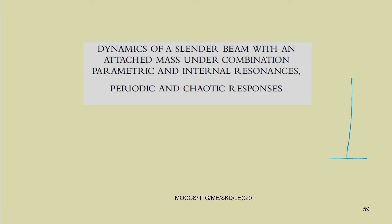We have taken the same base-excited cantilever beam with an arbitrary mass position. By placing the mass at an arbitrary position or adjusting it, we can set the frequencies of the second and first modes in a ratio that allows two-mode or even three-mode interactions. For two-mode interaction, we take omega_2 / omega_1 = 3:1. This gives rise to the combination parametric resonance condition, and here we will be particularly interested in the periodic and chaotic responses under this condition.